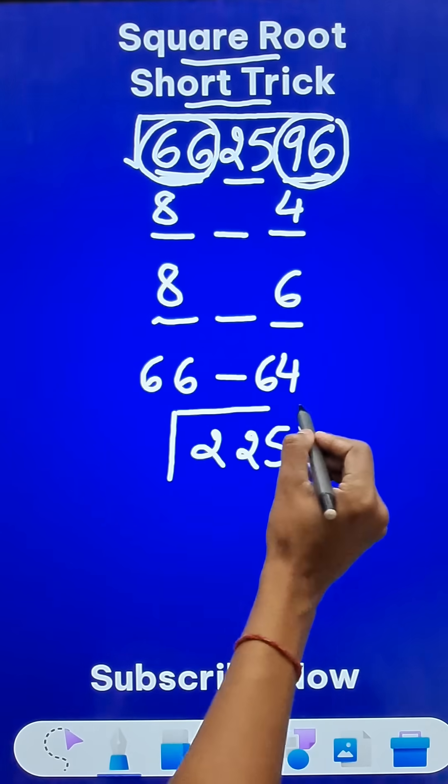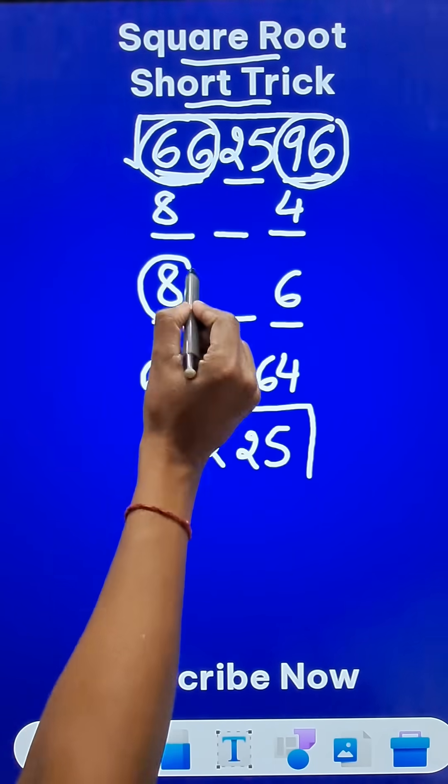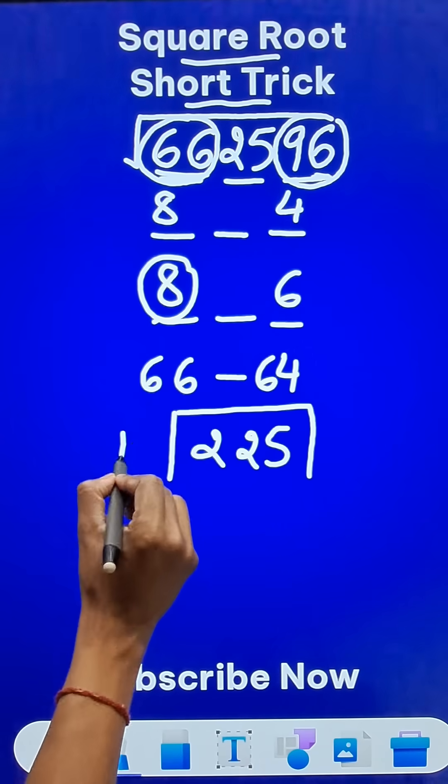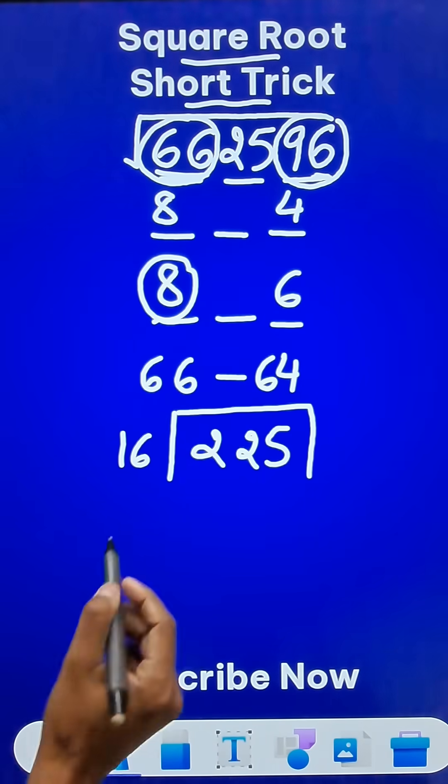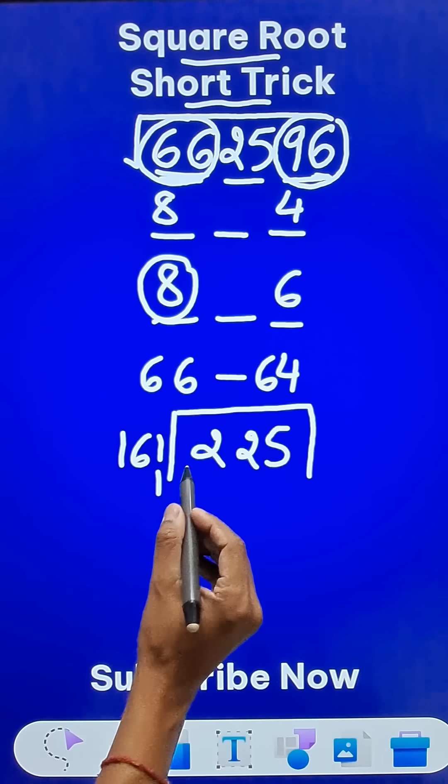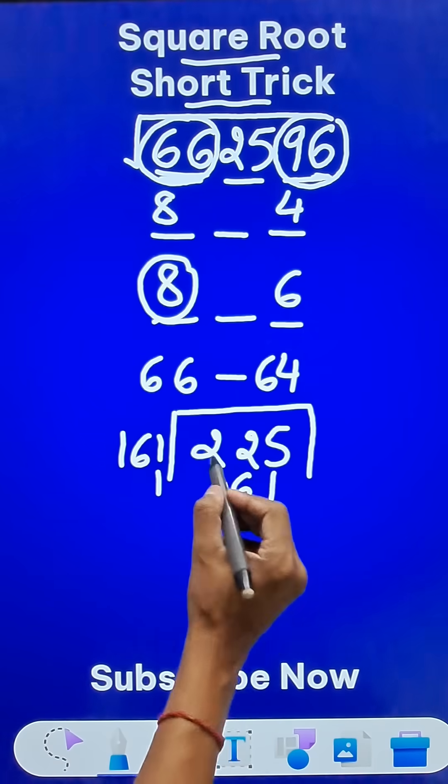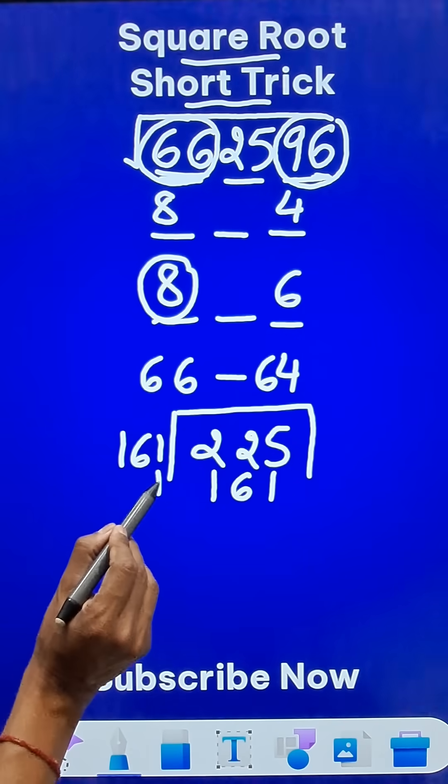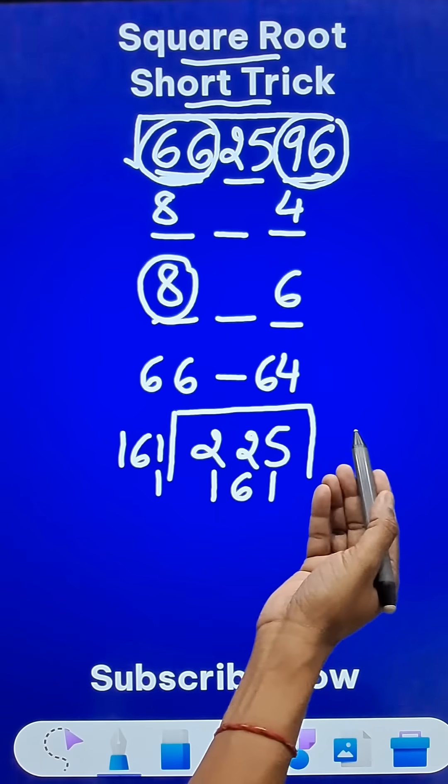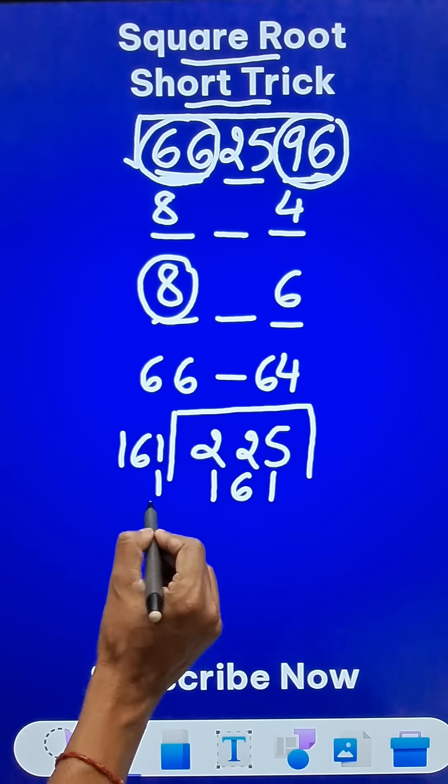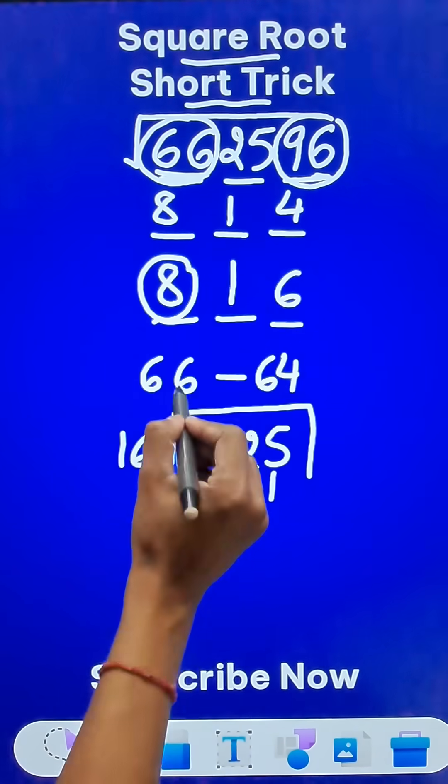And now a very basic step of long division method. The number here was 8. Double that number and write it on the left here, 16. And then 161 times 1 will get me closest to 225. But if I write 162 times 2, it is going to get beyond 225. I don't want that. So this number 1 forms the middle part of your answer.